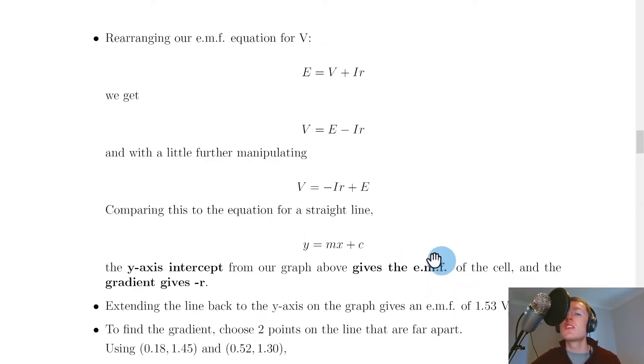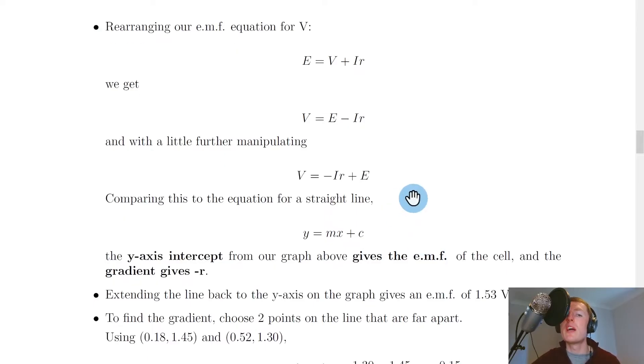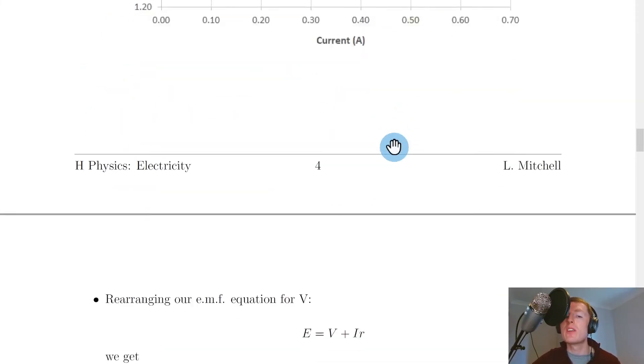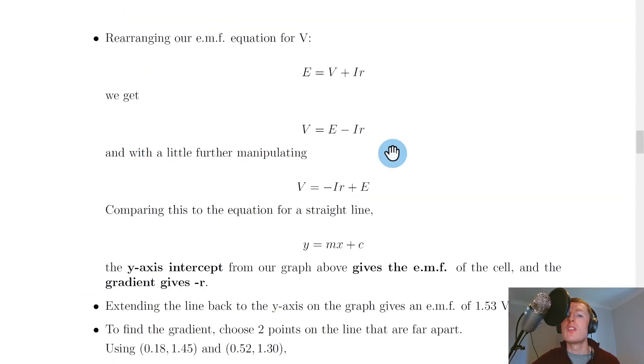And because we're dealing with a straight line what we can do first of all is we can rearrange our equation for emf and we can rearrange this to get v and that's because v you can see on the graph is our y-axis term. So I'm going to rearrange the equation for emf to get v on the left hand side.